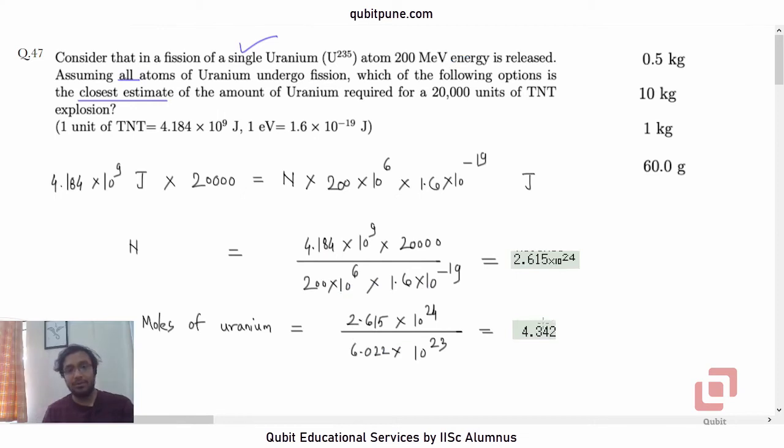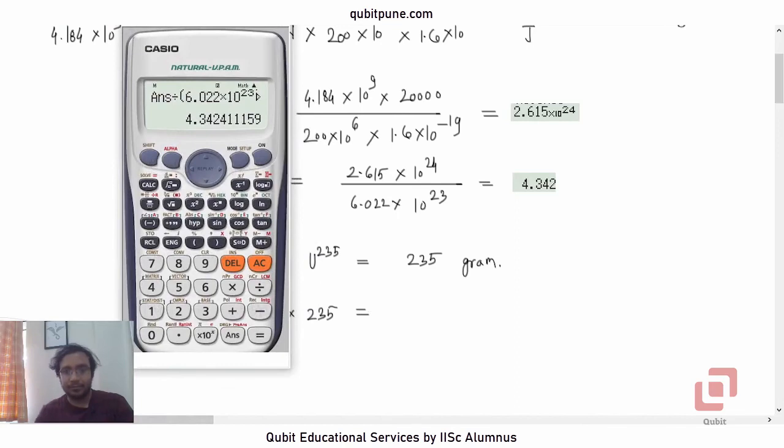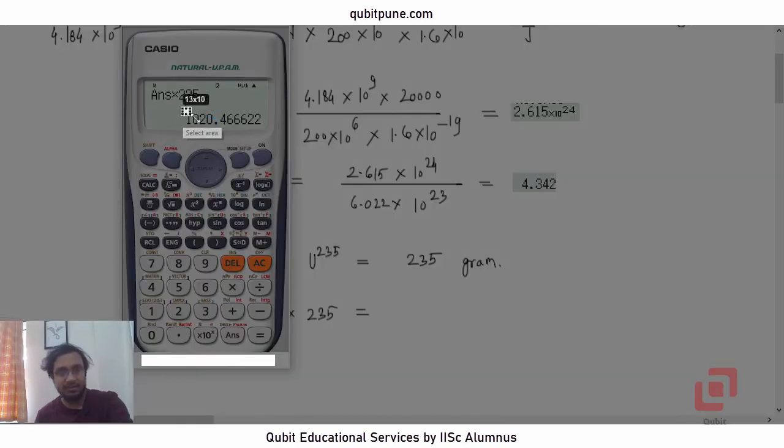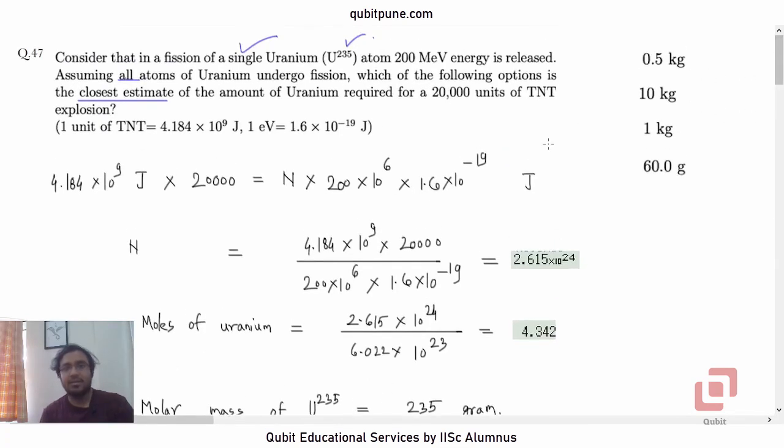Now we can say that the molar mass of uranium is 235 grams. Molar mass of Uranium-235 is 235 grams, and how many moles do we have? 4.342. So the actual mass will be 4.342 × 235, that is 1020.466 or approximately 1 kg. So the closest is 1 kg.